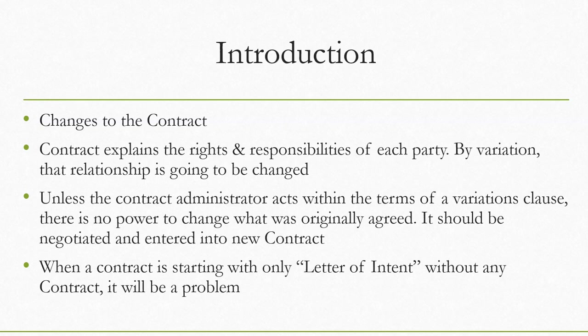If you assume there is no variation clause in the conditions of contract, but you know that while construction is ongoing there will be changes, then to agree on any change you would need to negotiate between both parties and enter into a new contract each time. Under the variation clause, we know how to handle and take actions when there is a change in our construction scope — so there is no need to go for a new contract each time.